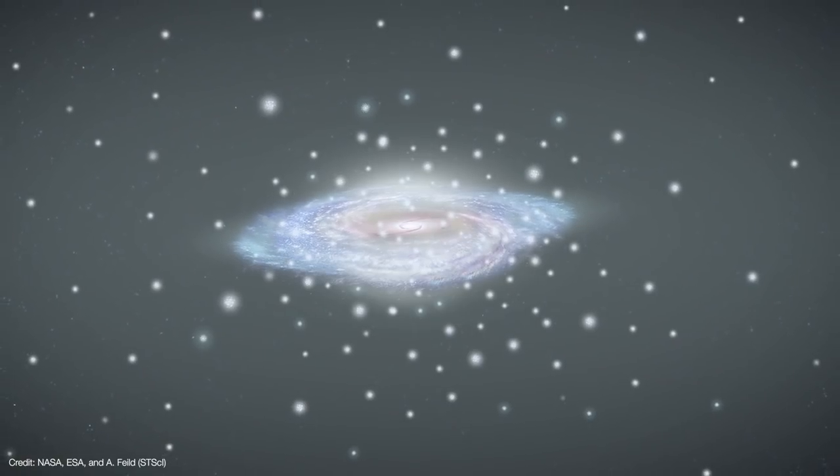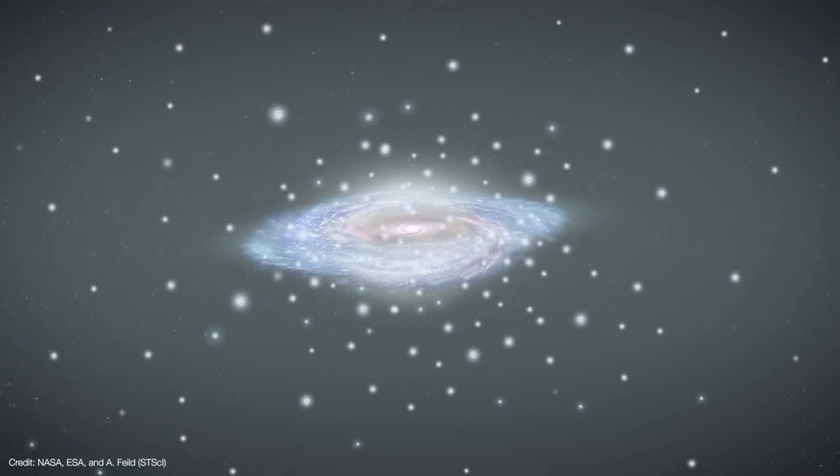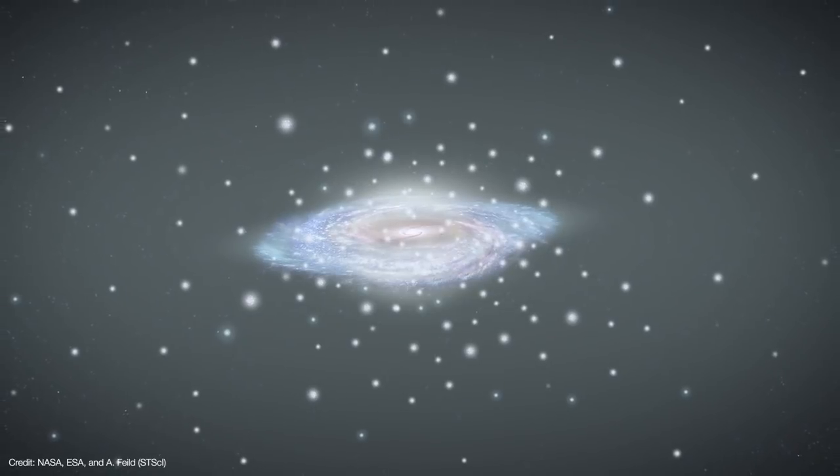Well, we can't directly measure what we can't see, but we can use globular clusters in the halo as tracers to measure their velocities. The more mass the galaxy has, the faster those clusters will move. Globular clusters make ideal tracers because they extend out to great distances from the galactic center.